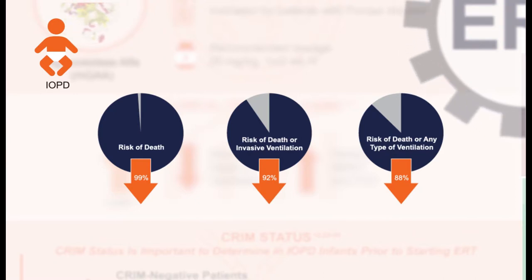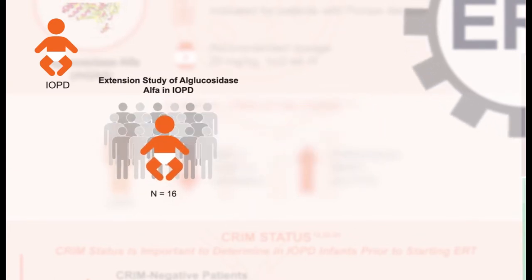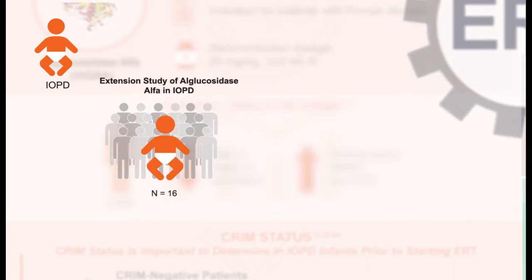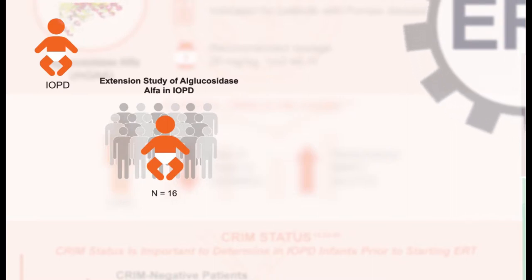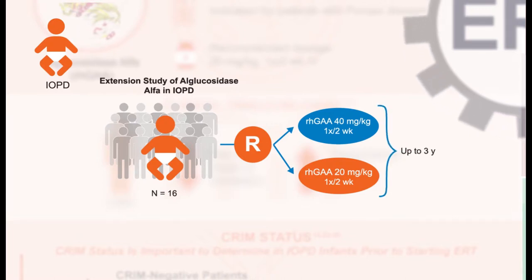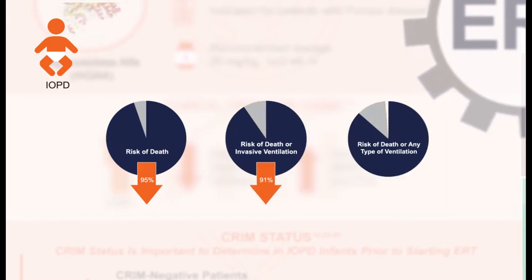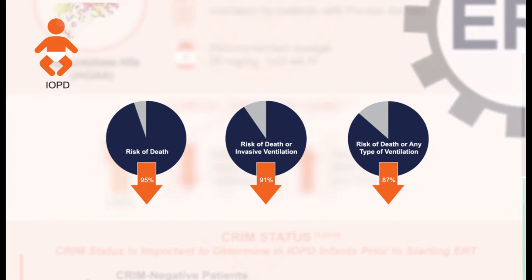When the two dose cohorts were compared, there was no clear advantage to treating with the higher dose with regards to efficacy. An extension study enrolled 16 of the original 18 patients, who continued to receive alglucosidase alfa at either 20 mg/kg or 40 mg/kg every two weeks for up to three years. Over the entire study period, treatment reduced the risk of death by 95%, invasive ventilation by 91%, and any type of ventilation or death by 87%, compared to an untreated historical control group.